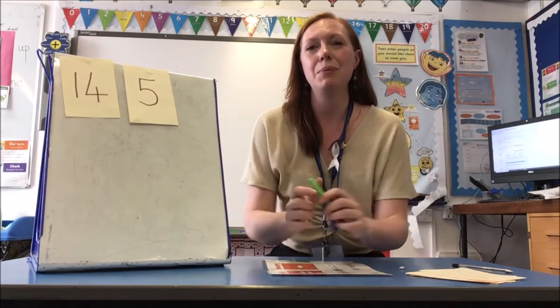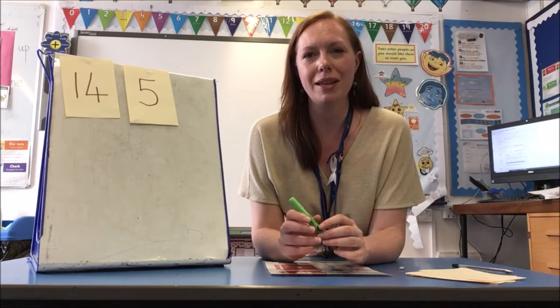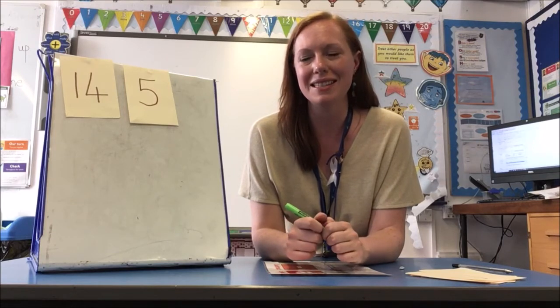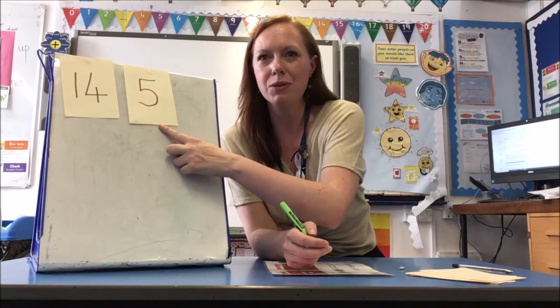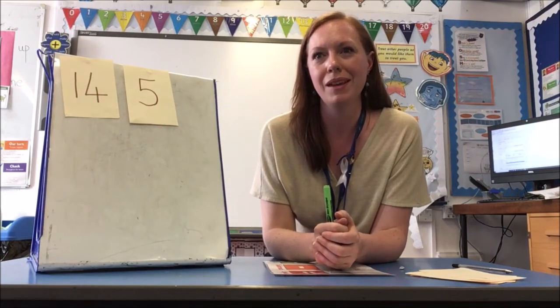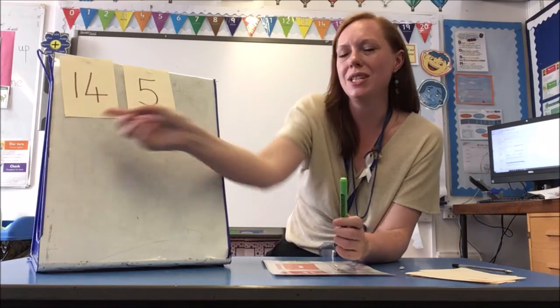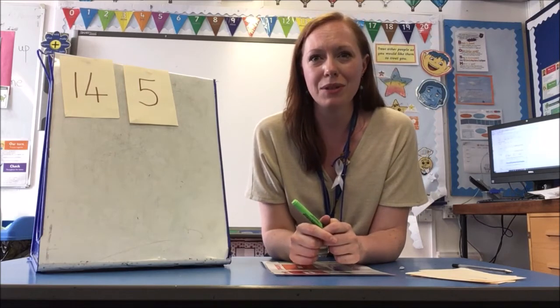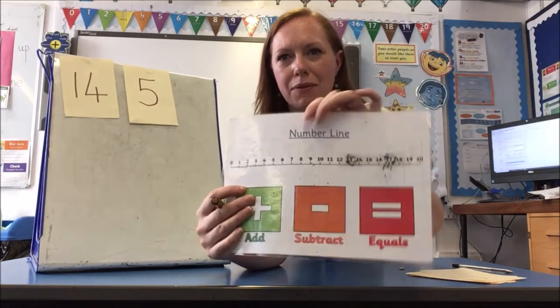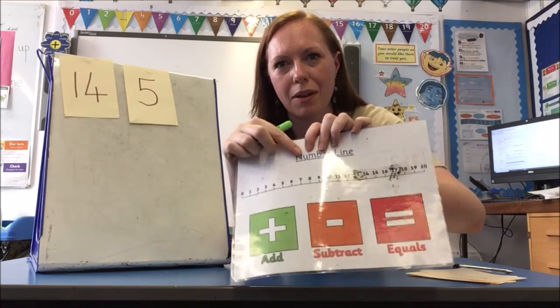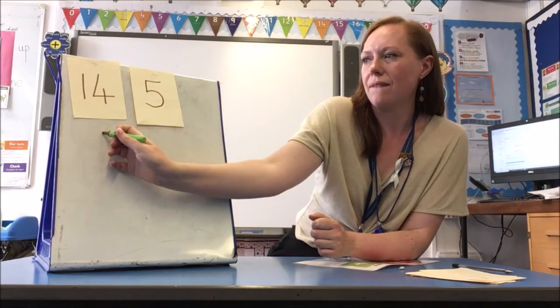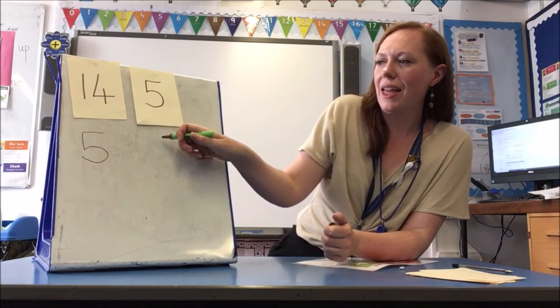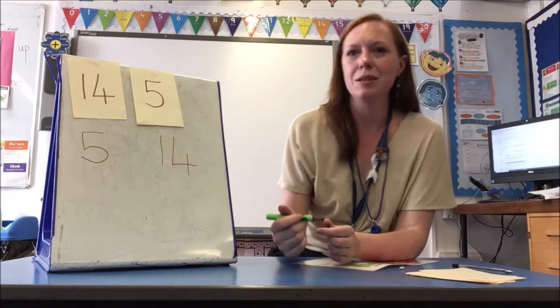I've chosen two numbers and now I need to put these in order, starting with the smallest number — the number that is less, that has the least. Which number is the smallest? If I had 14 sweets and Mrs Abbott had 5 sweets, who would have more? I would have more, wouldn't I? So 14 is bigger than 5. Which number would I say first when counting? I'd say the number 5. I can find the number 5 on my number line, and 14 — 14 is bigger than 5. So I would need to write 5 first because it is the smallest, and then the number 14, to put them in order.